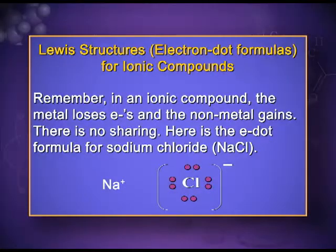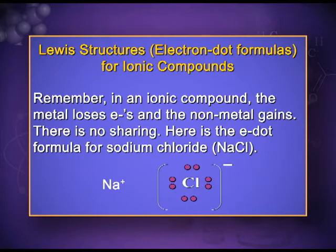In the electron dot structure of NaCl, you can see chlorine surrounded by eight dots — eight electrons — and a negative charge on the chloride ion because it gained one electron from sodium. Sodium carries one positive charge.